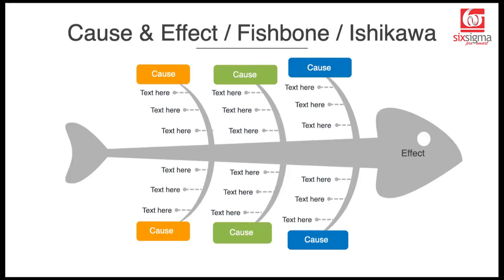In this video we're going to talk about the famous cause and effect analysis, which is also known as the fishbone or Ishikawa, named after the person who introduced it back in the 1960s. If you are a problem solver, if you deal with data, then it is very important for you to know about the cause and effect analysis. It's called a fishbone because the way you represent it, it resembles the skeleton of a fish.